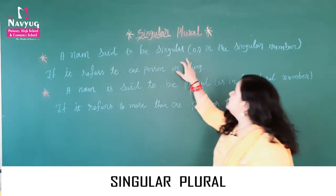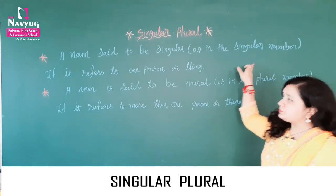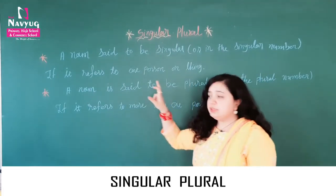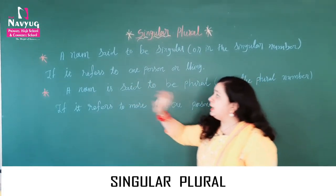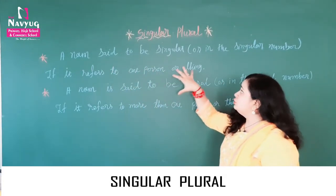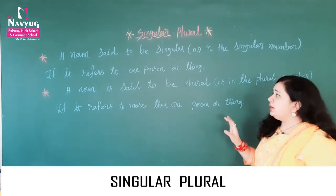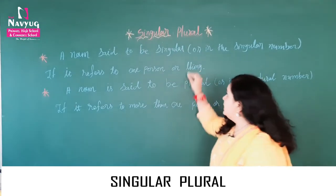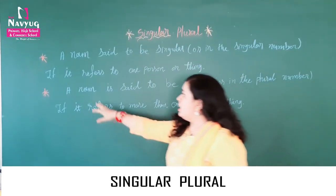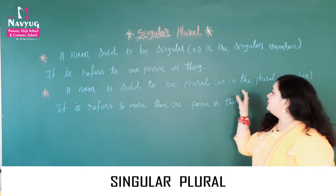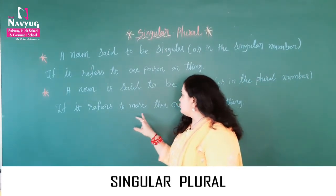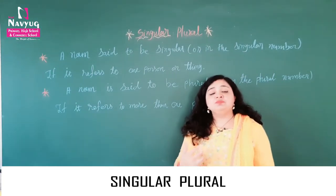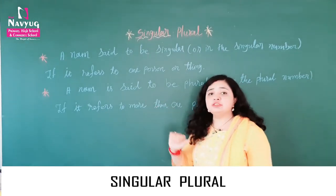A noun is said to be singular, or in the singular number, if it refers to one person or thing. So if it refers to one person or thing, we will use singular. Second, a noun is said to be plural, or in the plural number, if it refers to more than one person or thing. If it refers to more than one person or thing, then we will use plural.